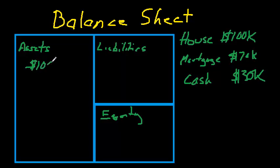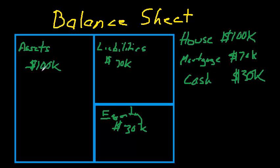You have assets of $100,000, and you have liabilities — an obligation to the bank to pay back your mortgage of $70,000 — and you have equity. Your equity is the cash that you put into the house, which is $30,000. Now we can see they balance out: your assets equal $100,000, your liabilities are $70,000, your equity is $30,000 and they sum to $100,000 as well. Whatever entry you make going forward, you have to make a corresponding entry so that it balances out — that's where you get the term balance sheet.